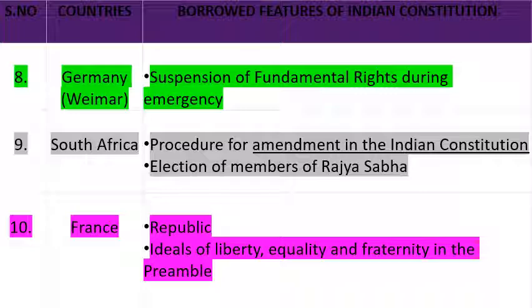Next है France। France से जो आपकी Preamble है — प्रस्तावना — उसमें 'Republic' जो word है, वो France से लिया गया है। Next है Ideal of Liberty और Equality, Fraternity in the Preamble — यह words भी Preamble में France से लिए गए हैं।